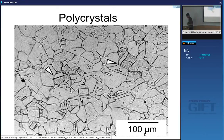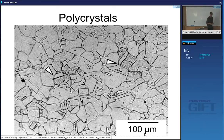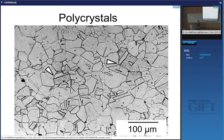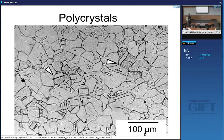The vast majority of engineering materials are not single crystals — they are polycrystals. An optical micrograph shows hundreds of crystals packed together to fill the space with no holes. When crystals grow from different points, they touch and fill all the space. These are the boundaries between crystals — the so-called grain boundaries.